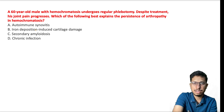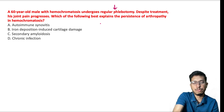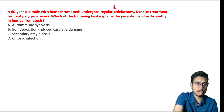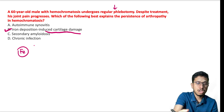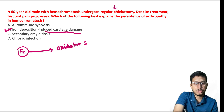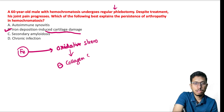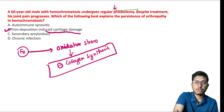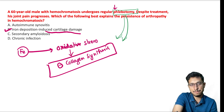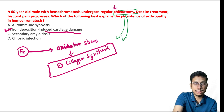A 60-year-old male with hemochromatosis undergoes regular phlebotomy — the usual treatment for hemochromatosis. But despite treatment, joint pain persists. The best explanation is iron deposition-induced cartilage damage, because iron causes irreversible damage to cartilage through free radical-mediated oxidative stress, which leads to impairment of collagen synthesis. Once this damage is established, phlebotomy is no longer able to help.